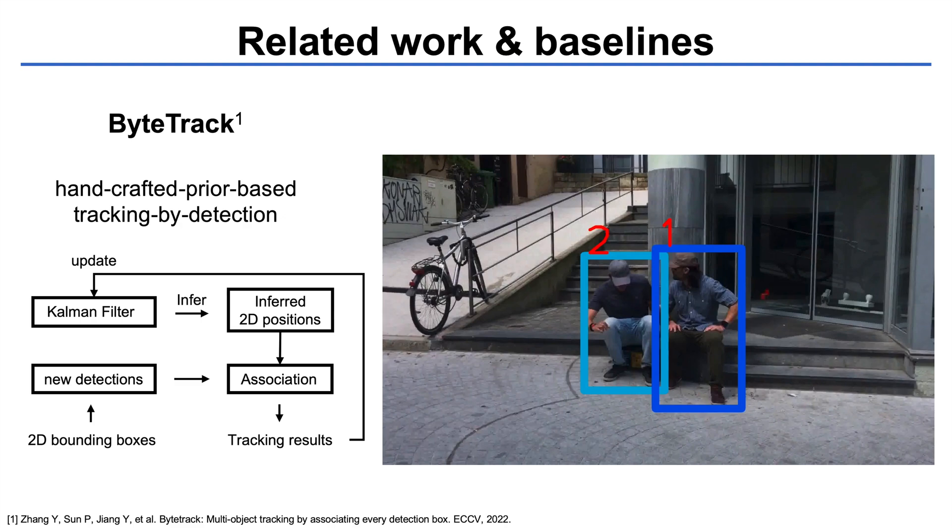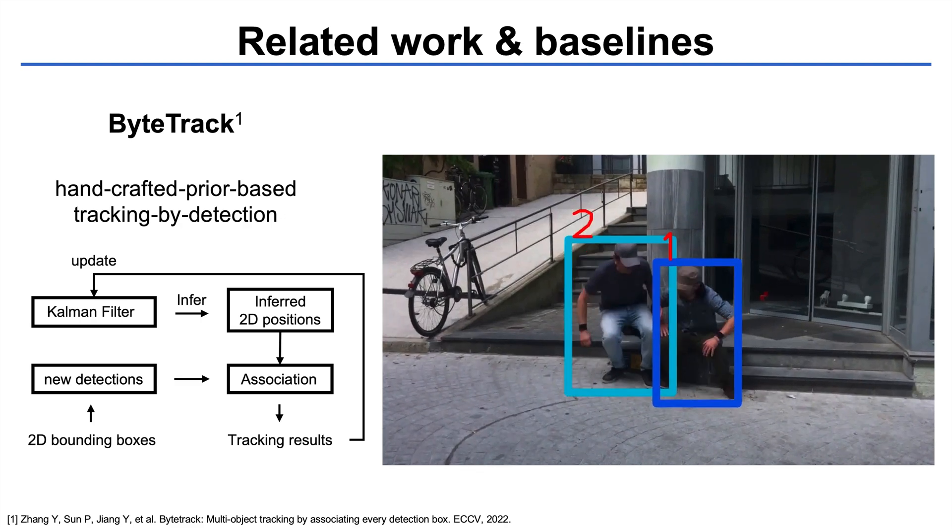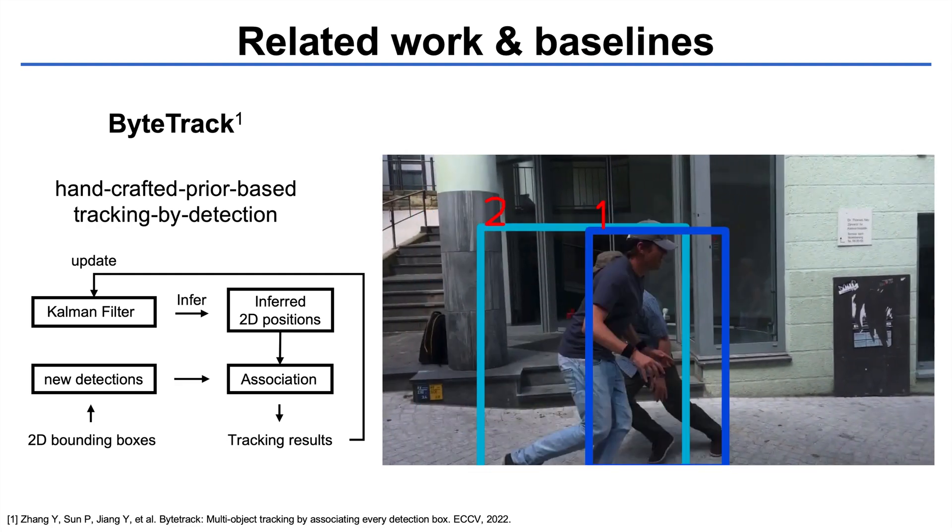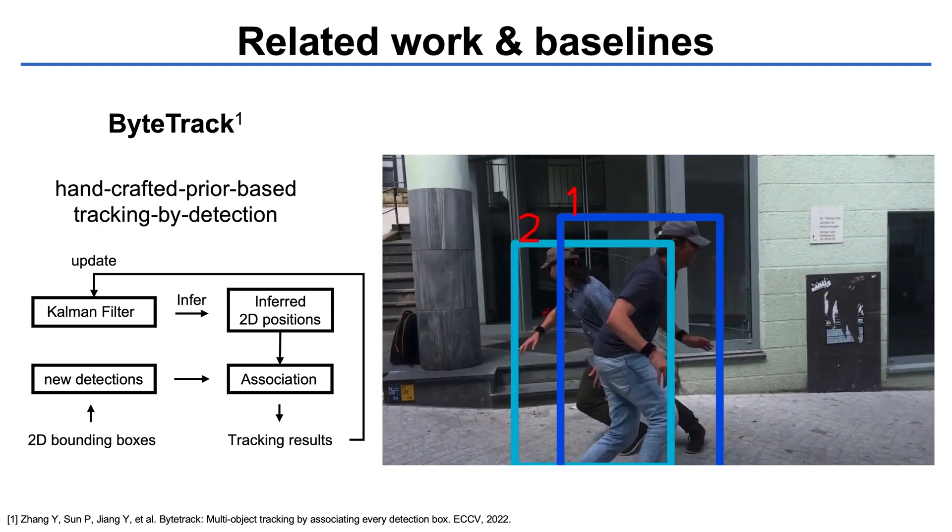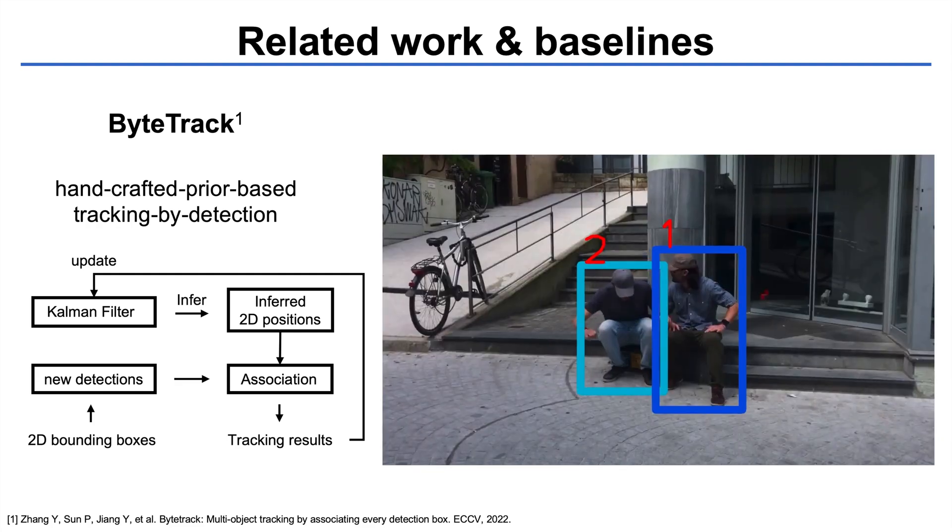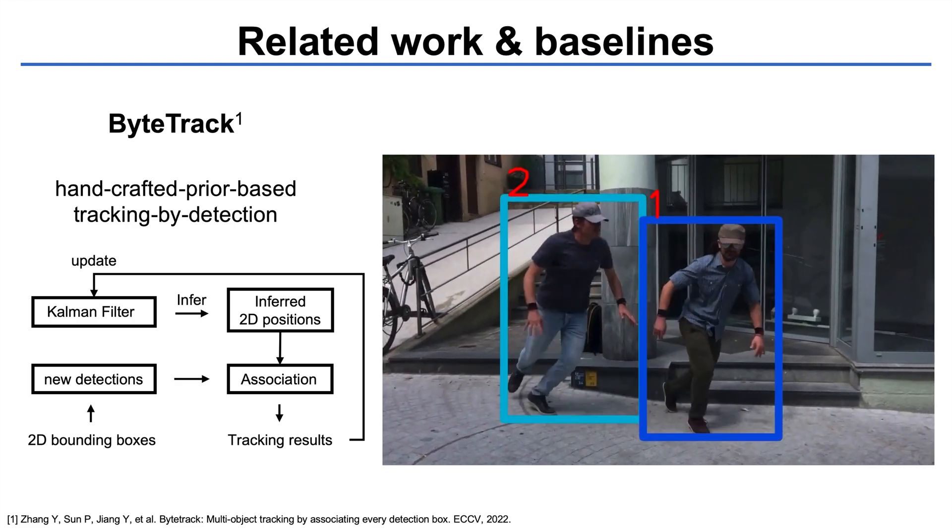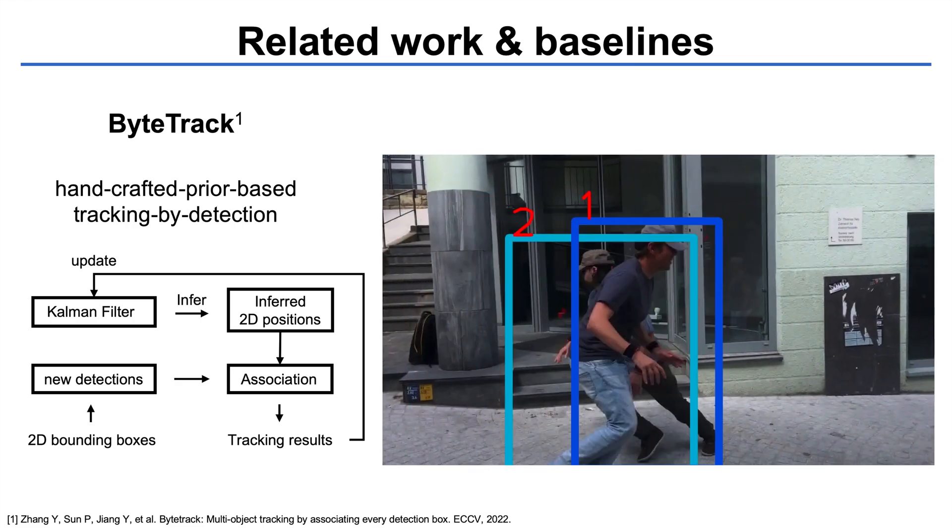To handle occlusions, ByteTrack employs a Kalman filter that acts as a temporal prior and aids multi-object association. Such handcrafted priors are vulnerable to irregular motions in videos captured by dynamic cameras.